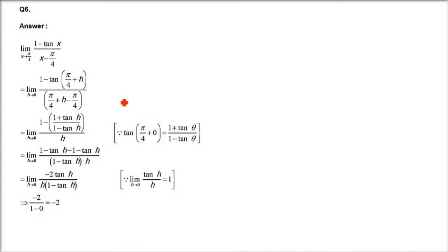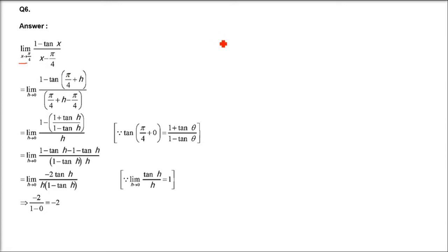Question number 6: (1 minus tan x) divided by (x minus π/4), limit x tending to π/4. First we change the limit using the substitution x = π/4 + h, so that h tends to 0 instead of x tending to π/4.